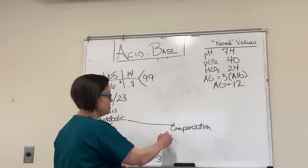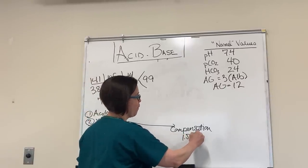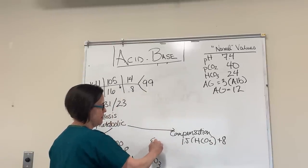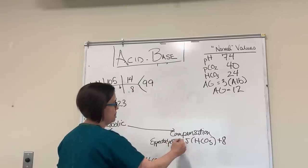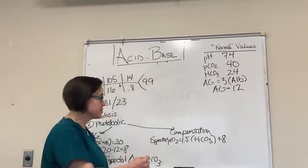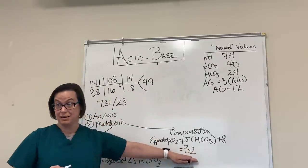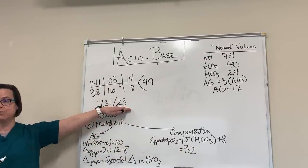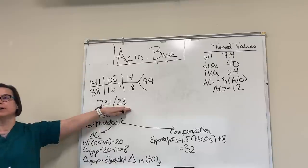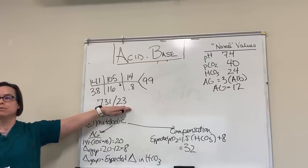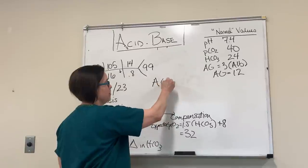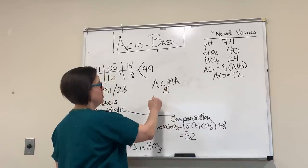Winters' formula: expected PCO2 equals 1.5 times bicarb plus 8. So 1.5 times 16 equals 24, plus 8 equals 32. My expected PCO2 is 32, but my actual PCO2 is 23. That means I'm blowing off extra CO2 — that's a respiratory alkalosis. So this patient has an anion gap metabolic acidosis and a respiratory alkalosis.